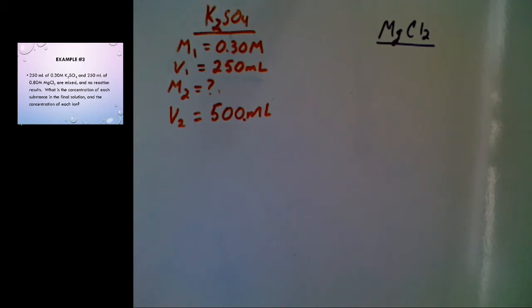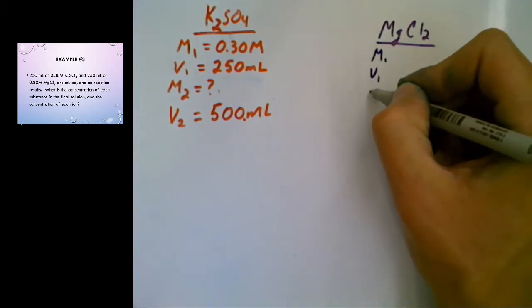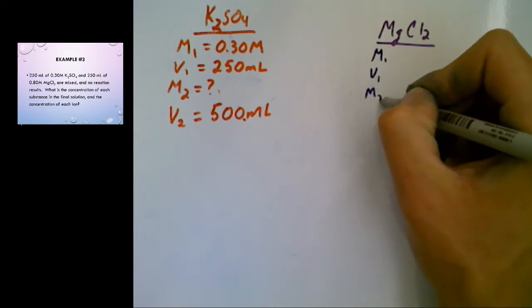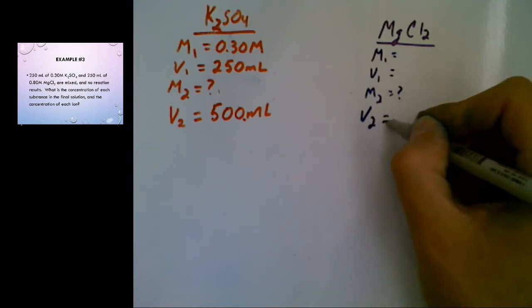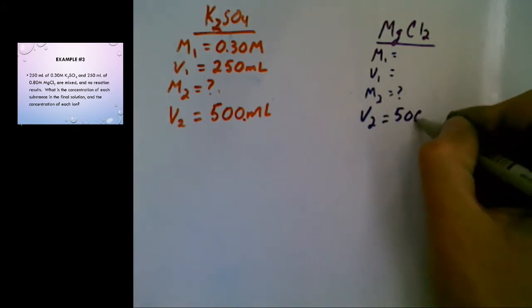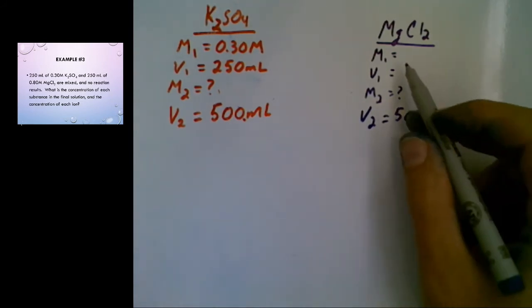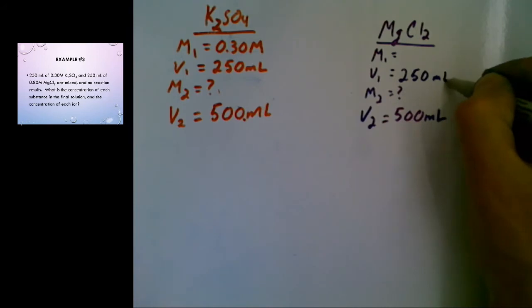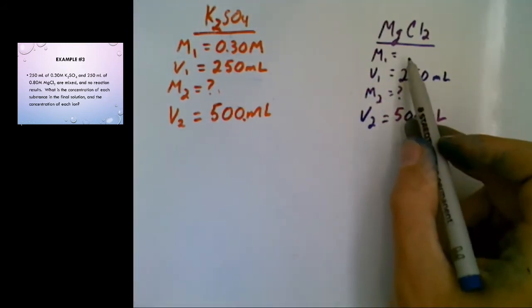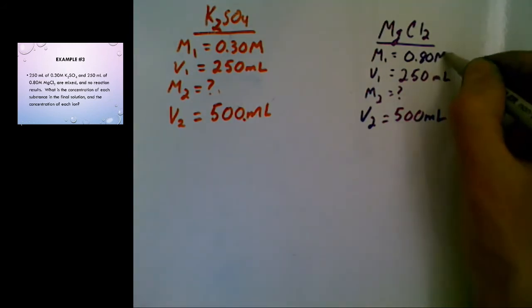Now, while we're at it, let's just sort this one out, the magnesium chloride. We're also going to have an initial concentration, an initial volume, a final concentration that we don't know yet, and a final volume that's also 500 milliliters because it's all in the same container. The initial volume here was also 250, and the initial concentration was 0.80 molarity.